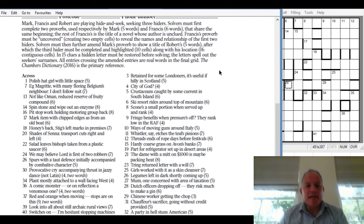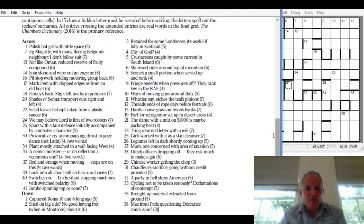The key thing for us from the preamble: In 15 clues a hidden letter must be restored before solving. The letters spell out the seeker's surnames. So in just 15 of these clues, there's a letter missing that we need to put in to understand some part of the clue, and those letters in order will spell out the seekers' surnames.